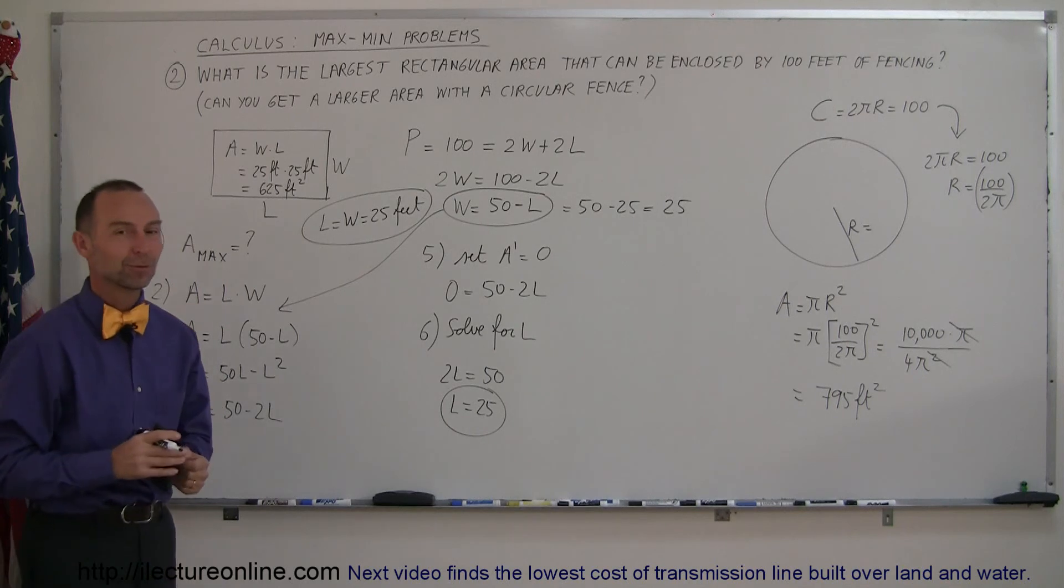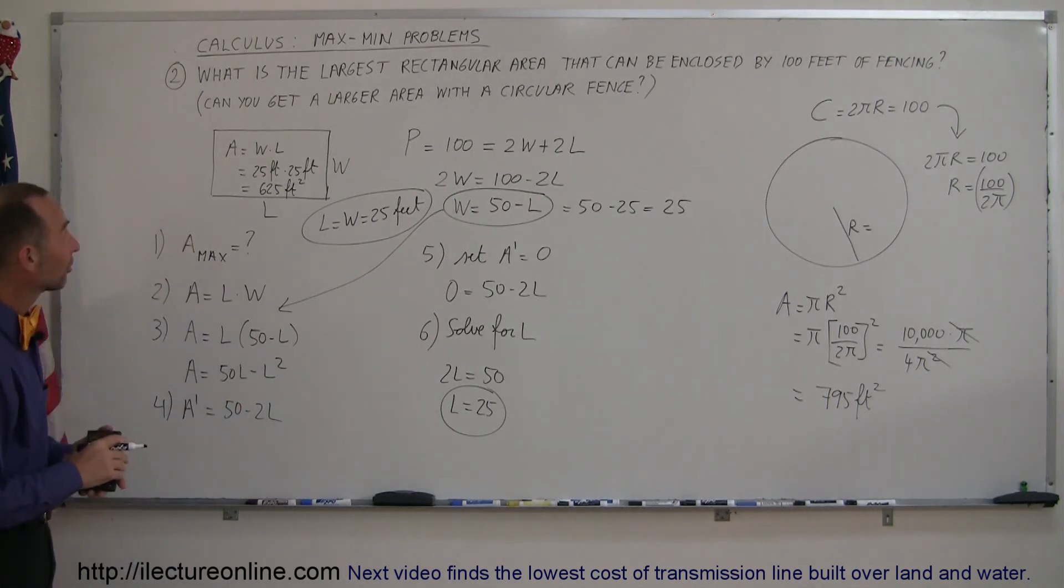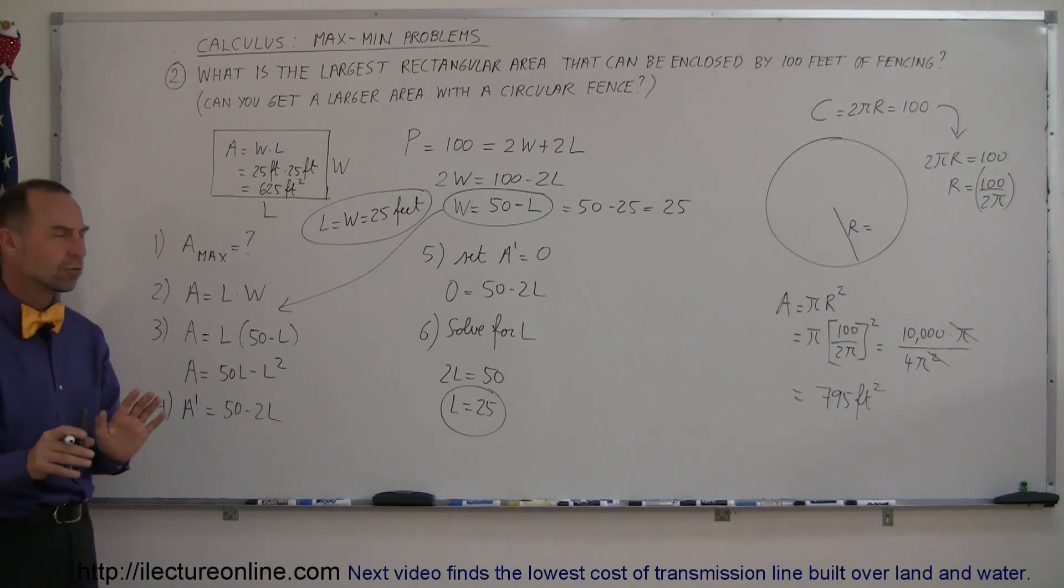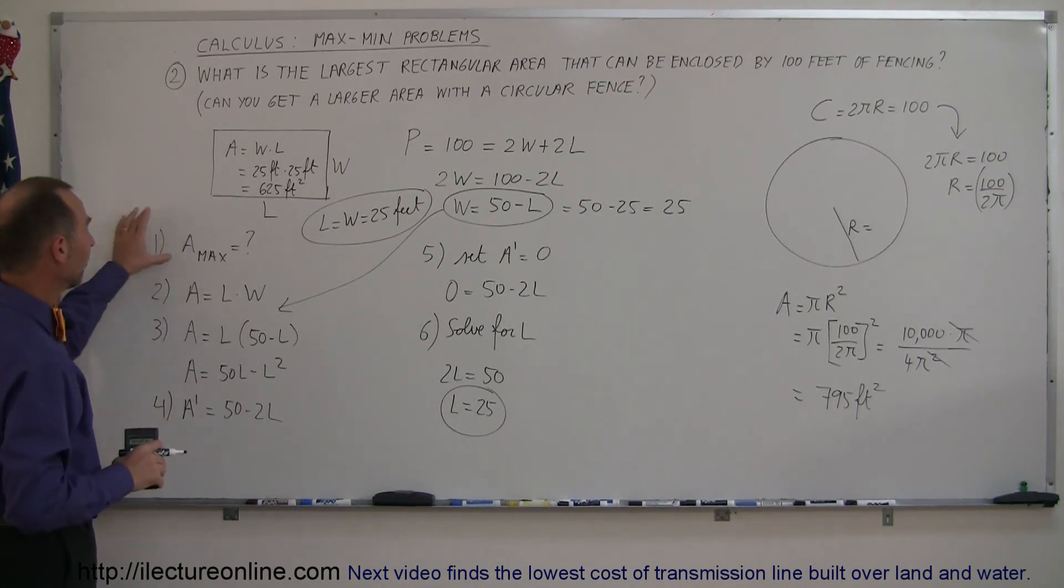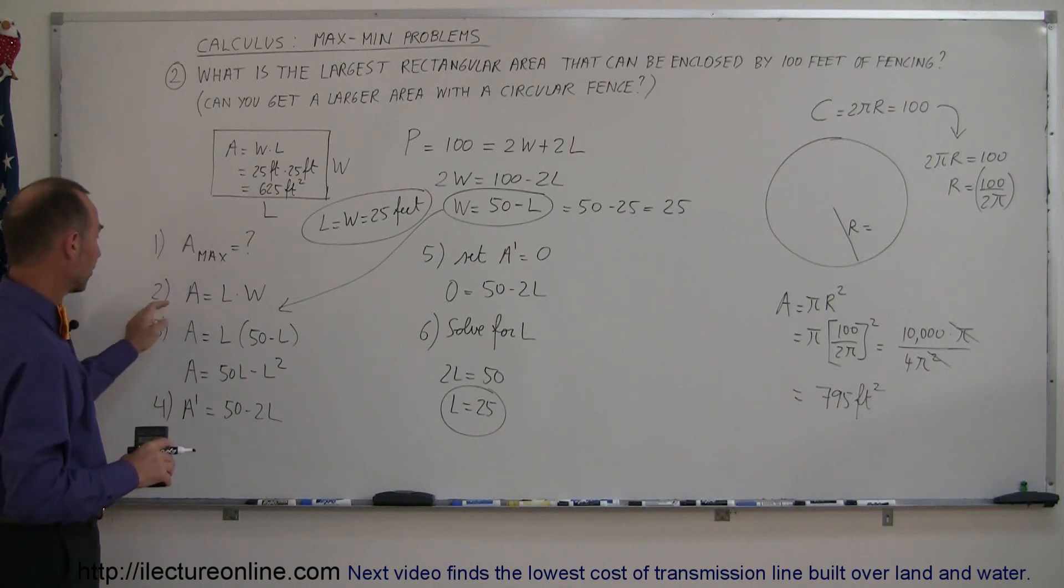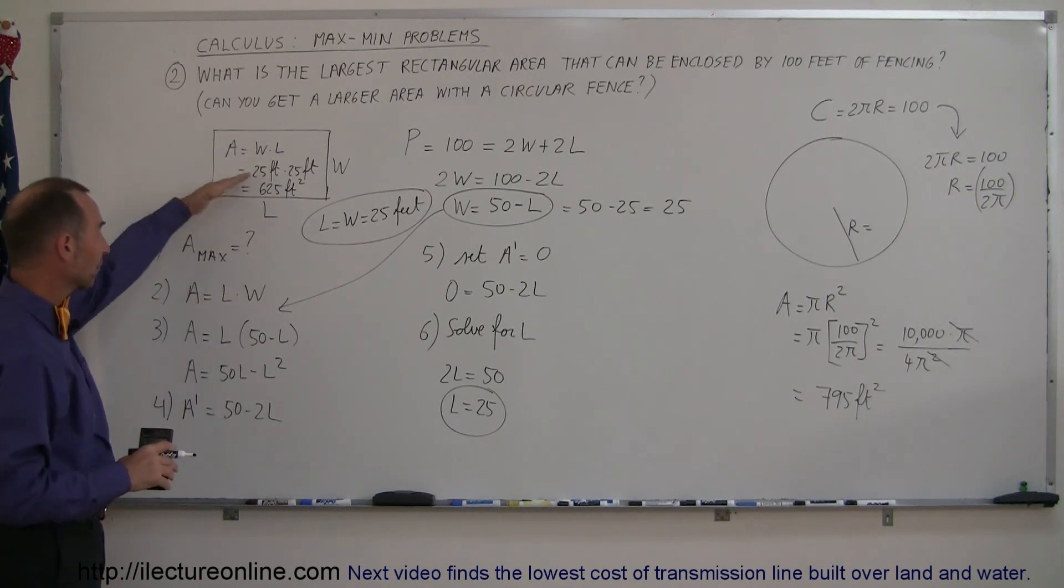you realize that a square is the largest rectangle you can have for a specific given perimeter. All right, example number two. So let's even come up with some more examples to see how you do maximum problems in calculus. But just to kind of review a little bit, again, step one, find out what's being maximized. Step two,